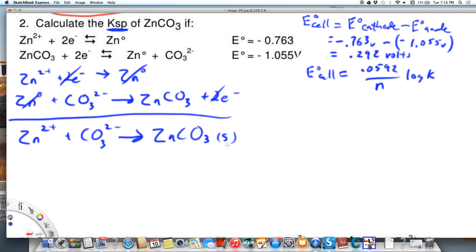The problem with this is if we get the K value for this reaction, it's going to be the flip because remember the Ksp reaction is zinc carbonate goes to Zn plus CO3. Let me show you what I mean.